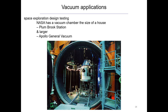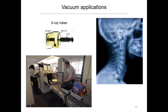For space exploration design and testing, NASA has a vacuum chamber the size of a house — the Plum Brook Station — and a larger one, the Apollo General Vacuum chamber. You can see how small the crew members are inside it, which shows you how large the vacuum chamber is. X-ray tubes also rely on vacuums — you can thank them for airport scanners and medical x-rays.